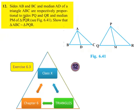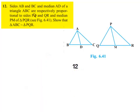Moving on to the twelfth question. Sides AB and BC and median AD of triangle ABC are respectively proportional to sides PQ and QR and median PM of triangle PQR. Show that triangle ABC is similar to triangle PQR.